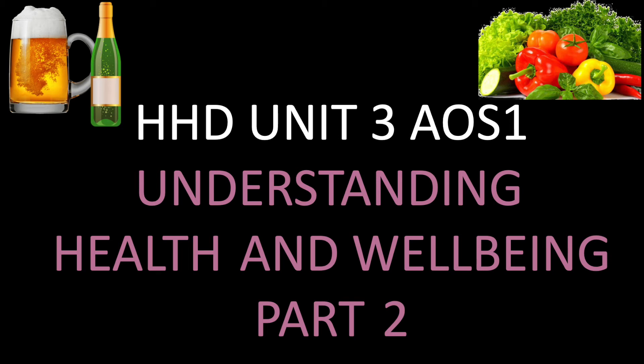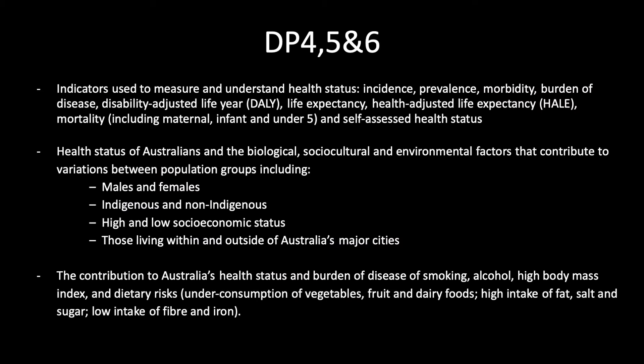Hello everyone and welcome to part two of HHD Unit 3, Area of Study 1: Understanding Health and Well-being. The focus of today's video will be dot points four, five and six. Indicators used to measure and understand health status: incidence, prevalence, morbidity, burden of disease, disability adjusted life year, life expectancy, health adjusted life expectancy.